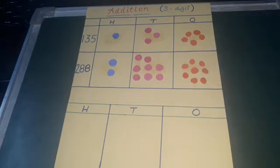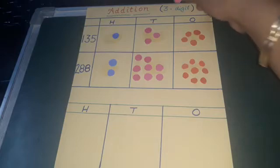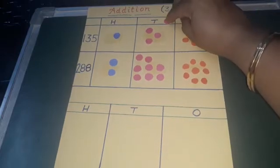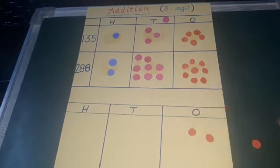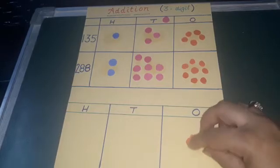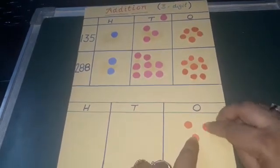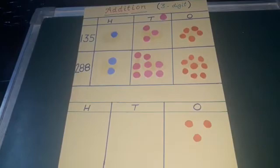So here comes 13. So 1 carry. And how many orange bindis will come children. Yes children. You are right. Here comes 1, 2 and 3. So how many ones are here. We have 3 ones. And 1 is carry over.